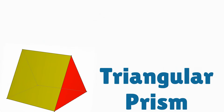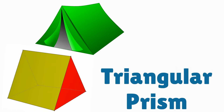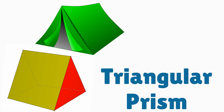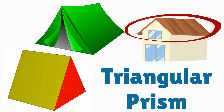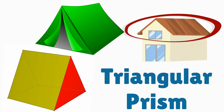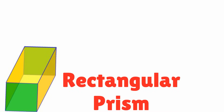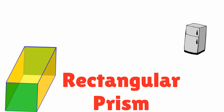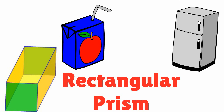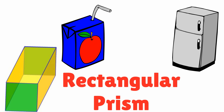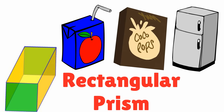Some common objects that look like a triangular prism are a tent and the roof of a house. Some common objects in the shape of a rectangular prism are a refrigerator, a juice box, and a cereal box.